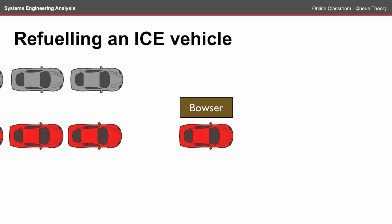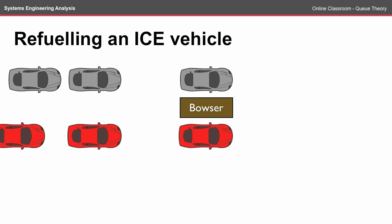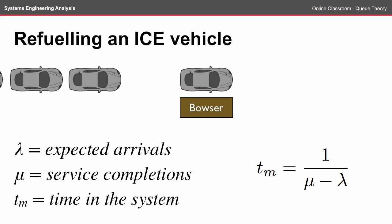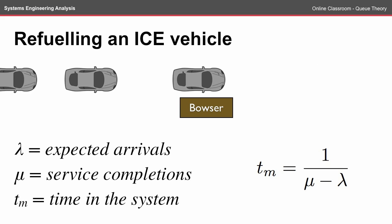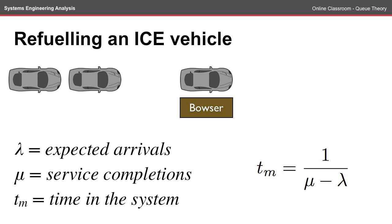We know how a standard petrol station works in that there's usually a couple of bowsers and there are usually a couple of lines of cars waiting to be refilled. We can apply Q Theory by looking at the expected arrivals and the service completions. To simplify things, we'll look at a single channel with a single queue.